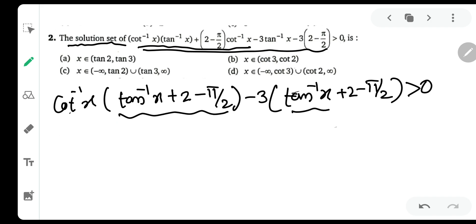Again, this whole bracket is coming out to be common. So tan inverse x plus 2 minus π by 2 and cot inverse x minus 3 which is greater than 0.